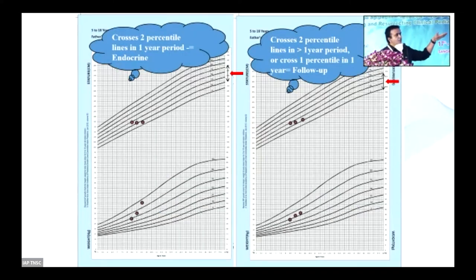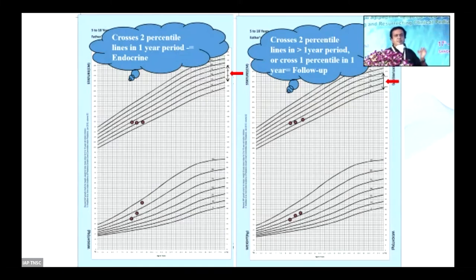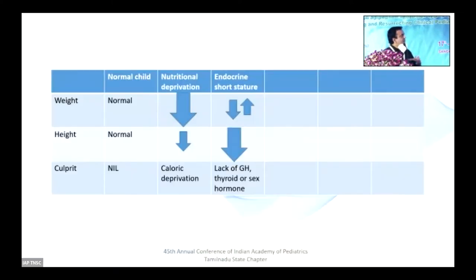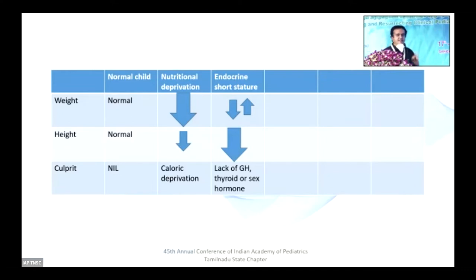Whenever you find a child who is not growing well and the height is just flat — with absolutely no increment and very poor growth velocity — that is the most important vital clue for the pediatrician to pick up an endocrine disorder. When height is affected much more than weight and growth velocity is poor, the child probably suffers from growth hormone lack, thyroid hormone lack, or sex hormone lack.